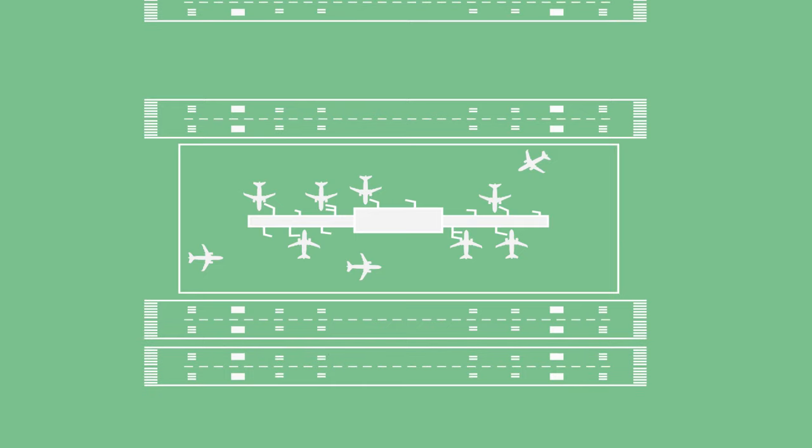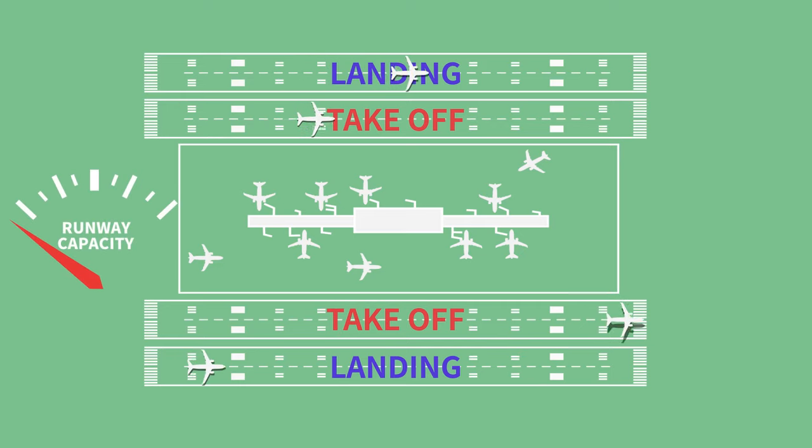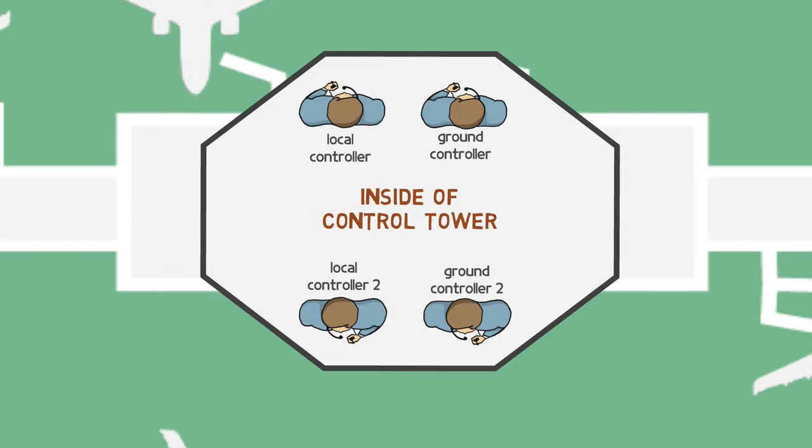If two parallel runways are added here, takeoff and landing can be operated separately from each side, and the capacity is greatly increased. Since the tower controllers cannot monitor all areas at any time, the controllers are in charge of each side.